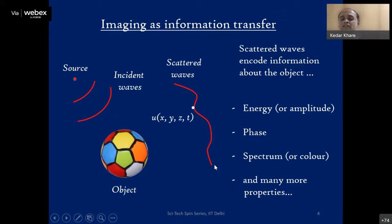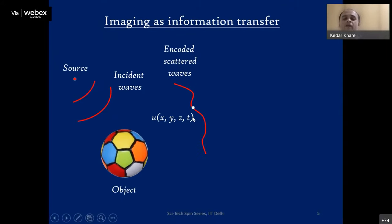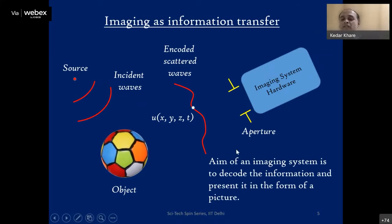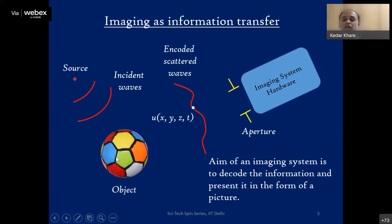As soon as light waves interact with an object, information is embedded in the scattered waves. What does an imaging system actually do? Once these encoded waves exist, your imaging system accepts them through some aperture. The goal is to decode the information present in these encoded waves and arrange it into a picture of what you're looking at — whether a football, an atom, or a star.